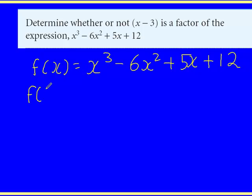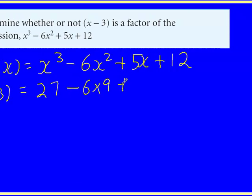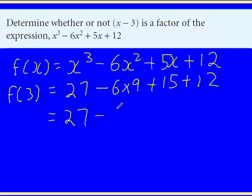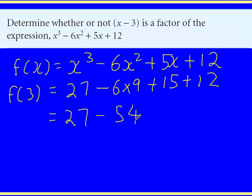So, f(3): 3³ would be 27. 6 times 3² would be 9. 5 times 3 would be 15. And then the 12. That would be 27. That would be 54.